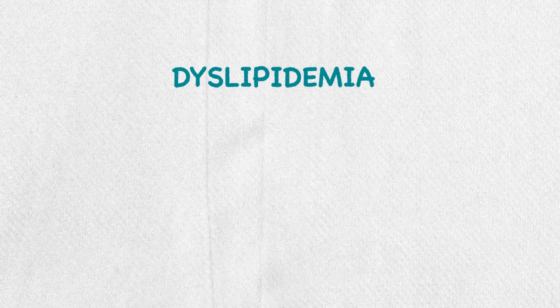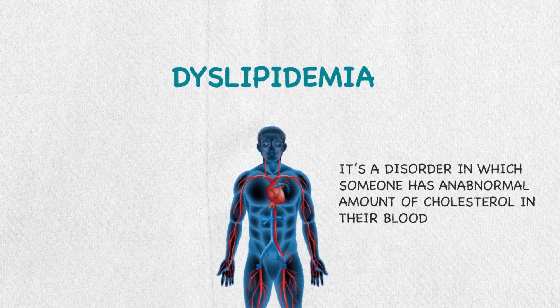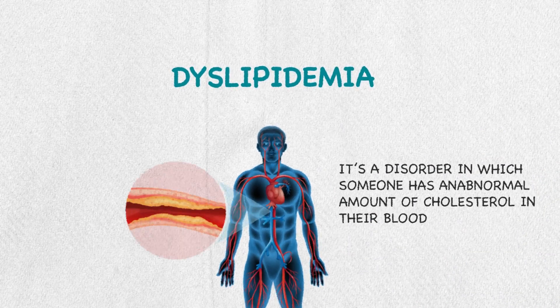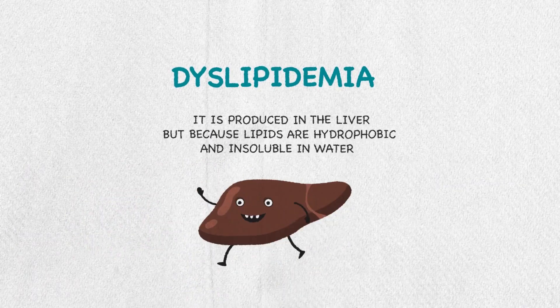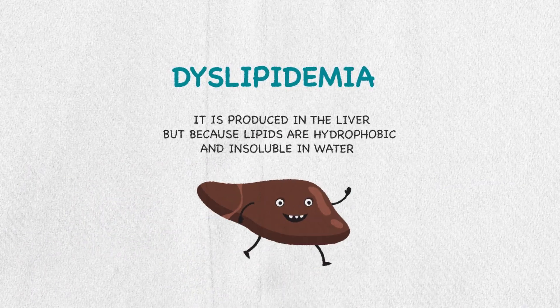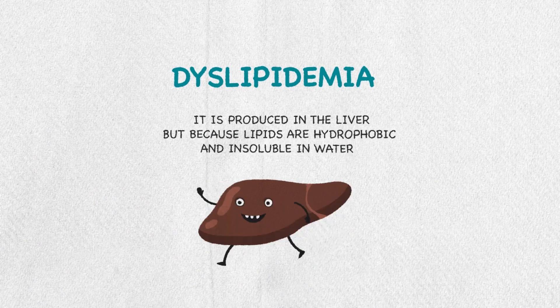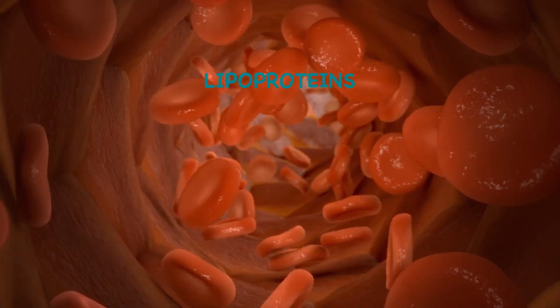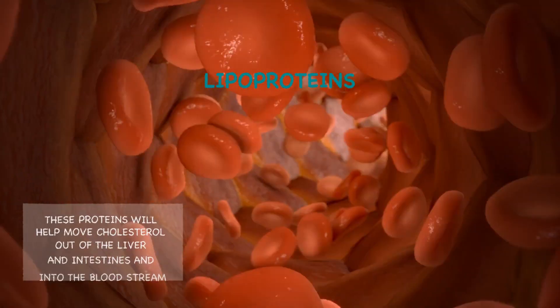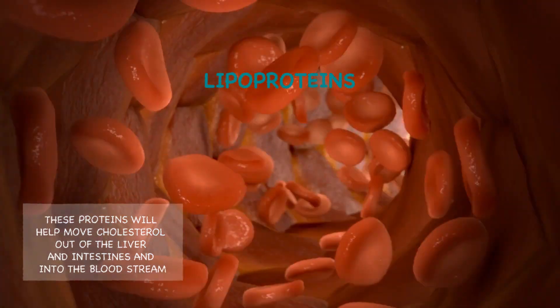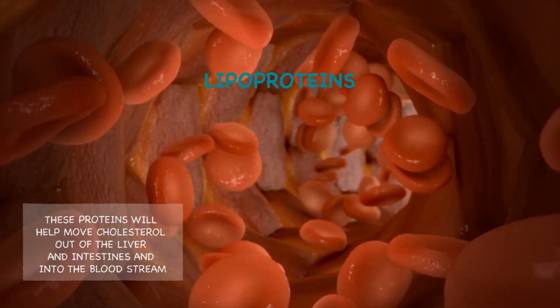Let's talk about dyslipidemia. It is a disorder in which someone has an abnormal amount of cholesterol in their blood, and cholesterol is the fatty substance necessary for the proper functioning of the body. It is produced in the liver, but because lipids are hydrophobic and insoluble in water, they are unable to move in the blood and will require the help of transport. That is why we need lipoproteins, which are the transport vehicle for moving the insoluble lipid around the body. These proteins help move the cholesterol out of the liver and the small intestines into the bloodstream.